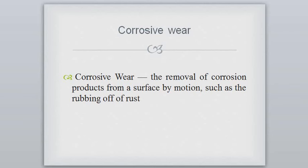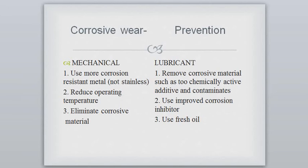Next is corrosive wear. Corrosive wear is a removal of corrosion product from the surface by motion such as rubbing of rust. Preventions: mechanically, use more corrosion-resistant metal, reduce operating temperature, and eliminate corrosive material. For lubricant, remove corrosive materials such as chemically active additives and contaminants, use improved corrosion inhibitors, and use fresh oil.